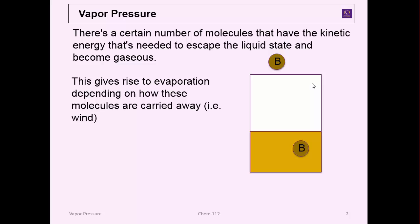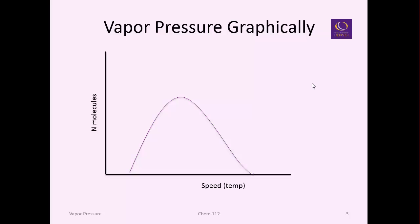This gives rise to evaporation depending on how these molecules are carried away if there's a breeze going over. If we were to look at vapor pressure graphically it might look like this. On the y-axis you have n molecules or the moles of molecules, and on the x-axis you have the speed or the temperature.